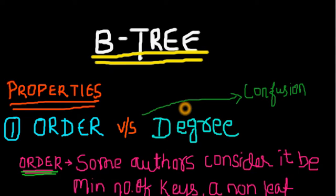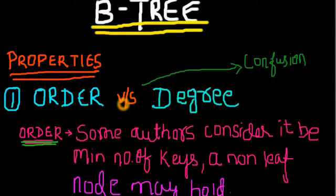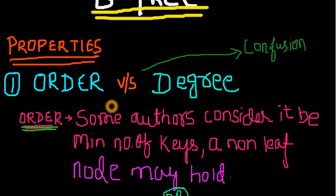Hello everyone, we'll discuss B-trees. This is an introductory video. First of all, we'll see what are the properties of B-trees. There are two things that may cause confusion: order and degree.